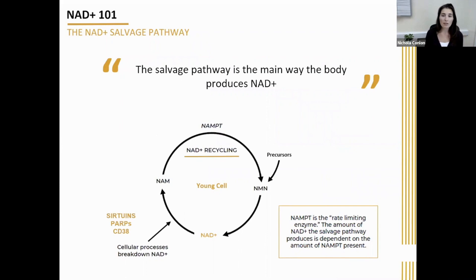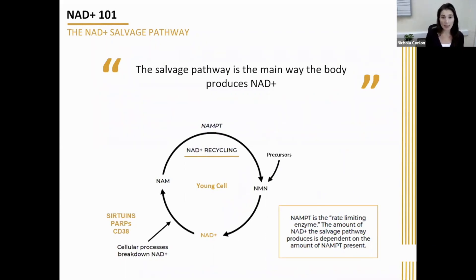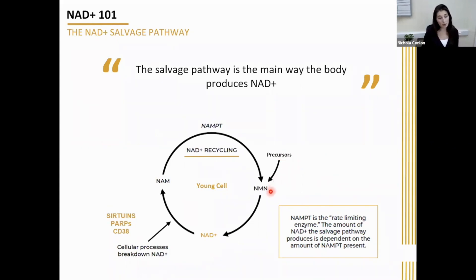Because the salvage pathway is the main way that the body produces NAD, I'm going to explain how the salvage pathway works in a little more detail. Basically, you've got the precursors I just described — these enter the pathway and are converted by enzymatic processes into NAD, which is then used up in the cell.